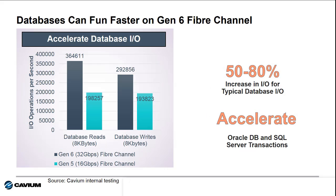If we compare Gen5 16GB fiber channel to Gen6 32GB fiber channel, while the IOPs are the same, the bandwidth of Gen6 is two times more than the Gen5 technology. This makes a big difference when block sizes are larger than 16K or so. For example, most database applications are running larger block sizes, and with more available bandwidth, Gen6 can outperform Gen5 in terms of database I.O. operations.